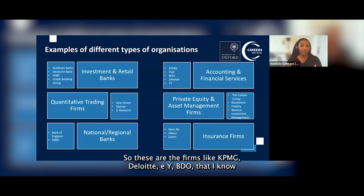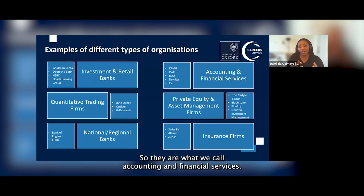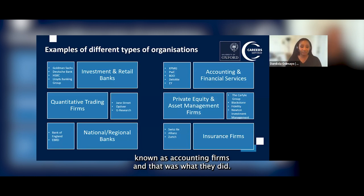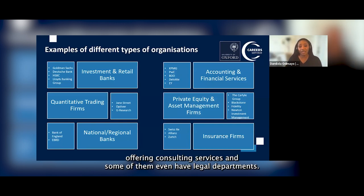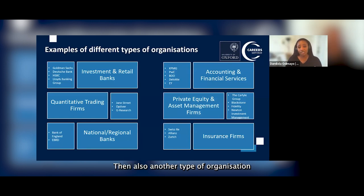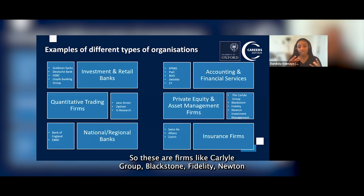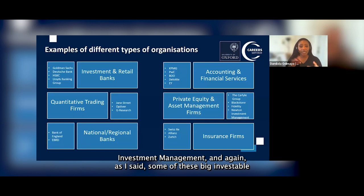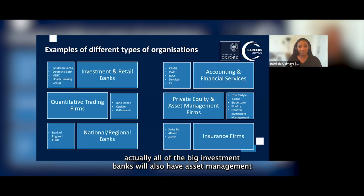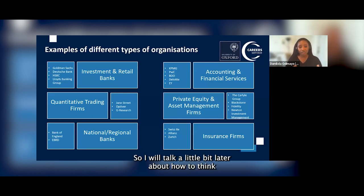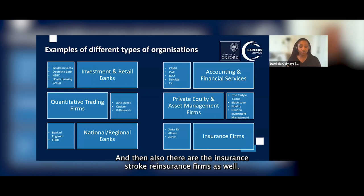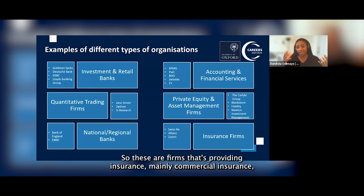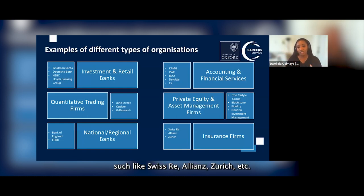Also within this sector are the big accounting and financial services firms — KPMG, PwC, Deloitte, EY, BDO. They were historically known as accounting firms, but over the years they have branched out into financial services, consulting, and some even have legal departments. Then there are private equity and asset management firms like Carlyle Group, Blackstone, Fidelity, and Newton Investment Management — all large investment banks also have asset management divisions. And there are insurance and reinsurance firms providing mainly commercial insurance, such as Swiss Re, Allianz, and Zurich.